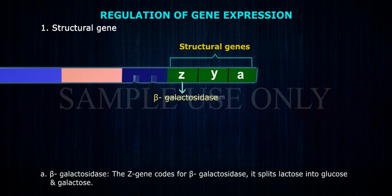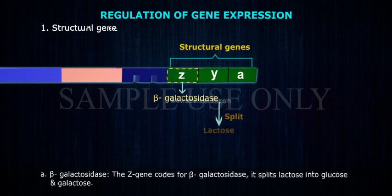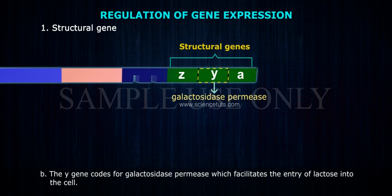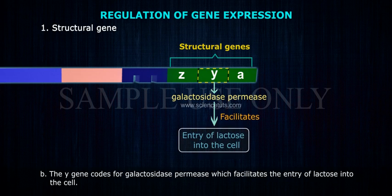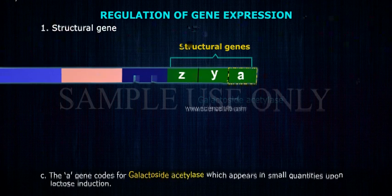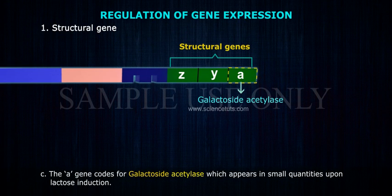A. Beta-galactosidase: The Z gene codes for beta-galactosidase, which breaks lactose into glucose and galactose. B. The Y gene codes for galactoside permease, which facilitates the entry of lactose into the cell. C. The A gene codes for galactoside acetylase, which appears in small quantities upon lactose induction.